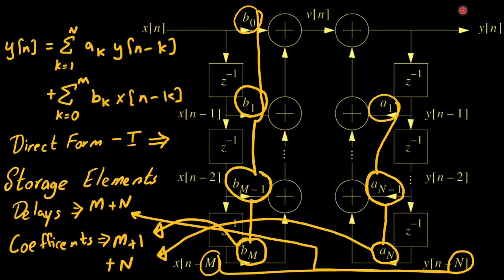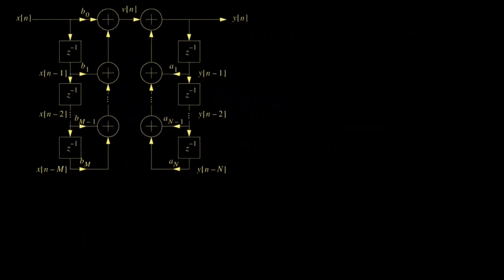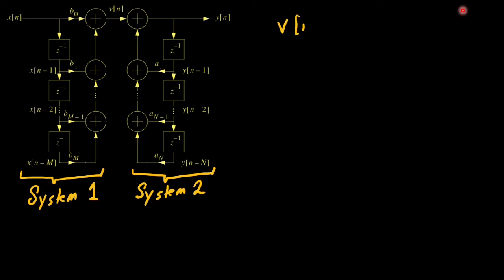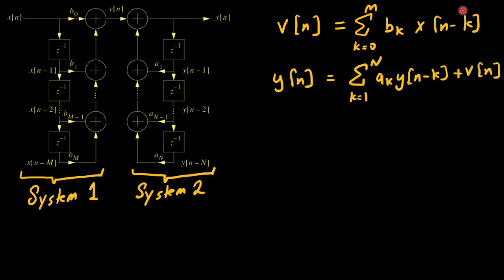Note that the type 1 block diagram representation is simply a cascade of two systems. Output of system 1 is v of n which serves as the input of system 2. Hence the difference equation for v of n is equal to a summation from k 0 to m bk x of n minus k. And the output y of n is a summation from k 1 to n ak y of n minus k plus v of n.